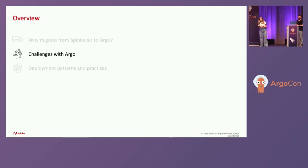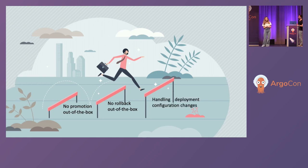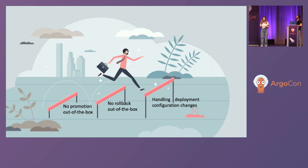But the move to Argo wasn't without its challenges. The main ones were: no promotion out of the box, no rollback out of the box, and what about deployment configuration changes? Nobody is really talking about them. Should they be handled by the GitOps controller only, or should they be handled through some kind of pipeline?